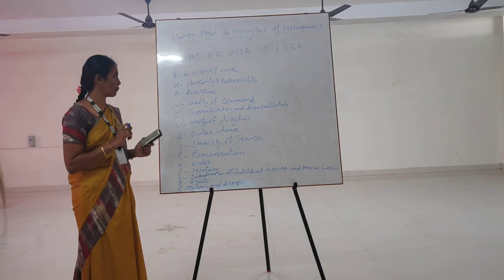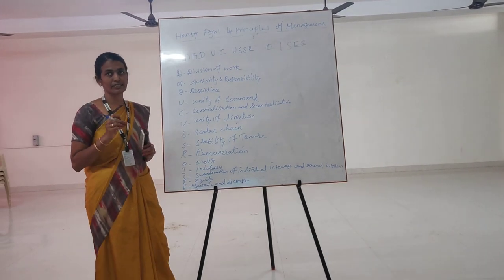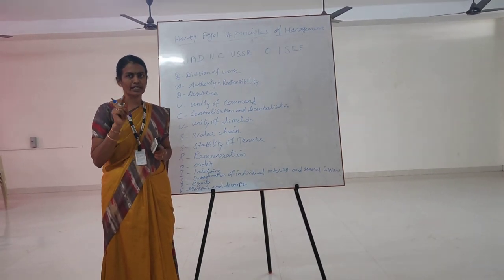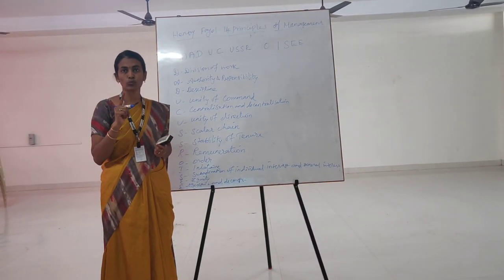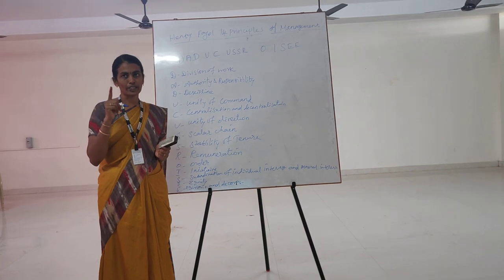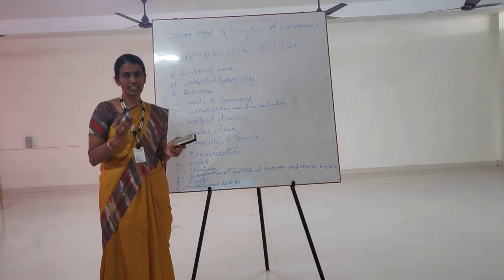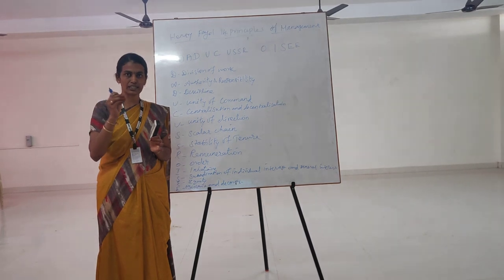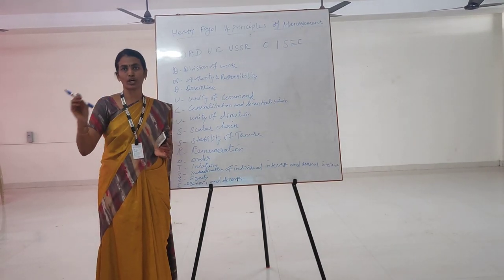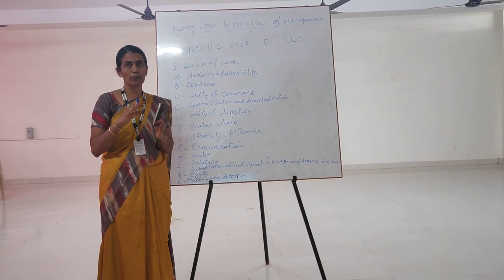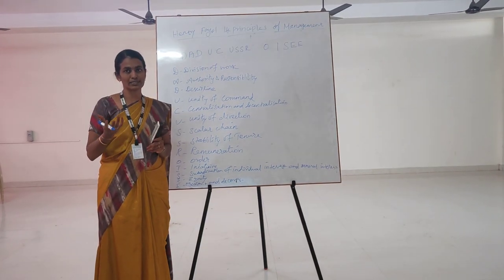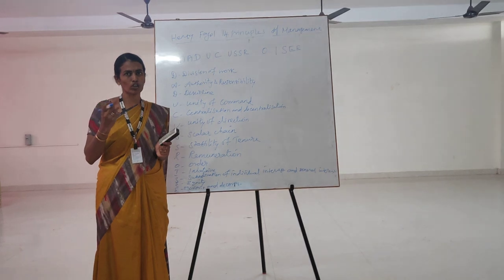The next one is Unity of Command. It means that a person should receive orders from only one superior. An individual cannot serve two bosses at the same time. The right approach is to survive in the correct way of work. The wrong approach is where there is misunderstanding, confusion, and conflict.